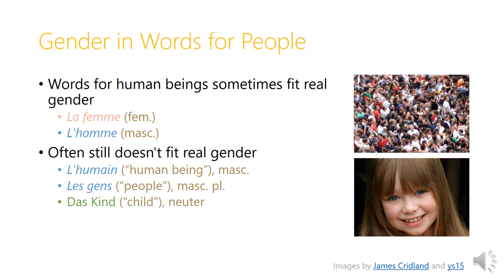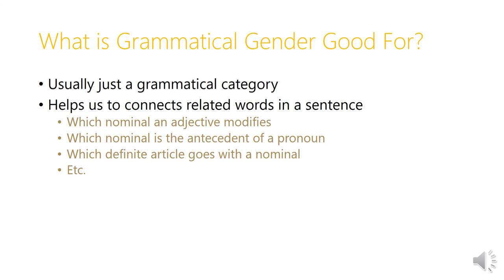In German, interestingly enough, 'das Kind,' which means child, is neuter in gender, even though children, of course, are either masculine or feminine. What, then, is grammatical gender good for? If it's usually just a grammatical category that doesn't have anything to do with real-world gender, what's the point of grammatical gender? Well, it helps us to connect two related words in a sentence.